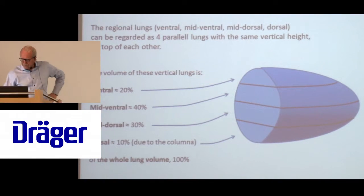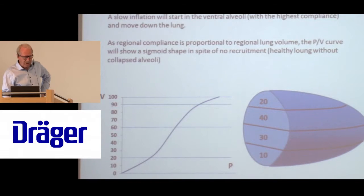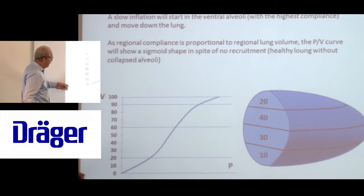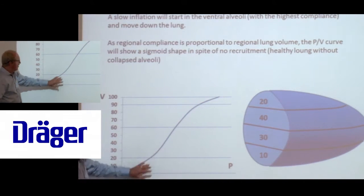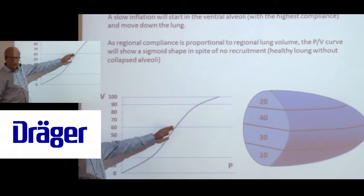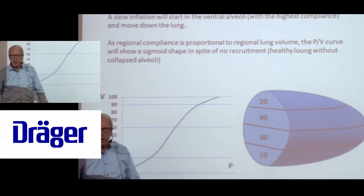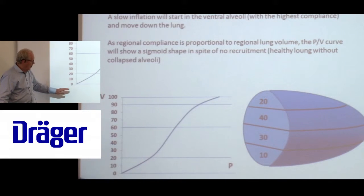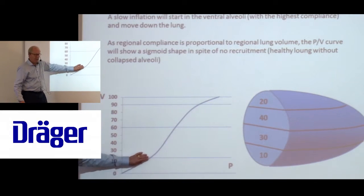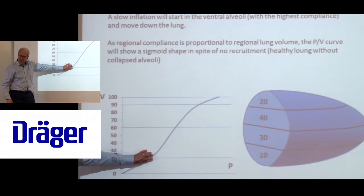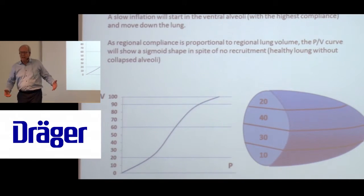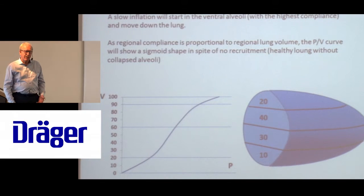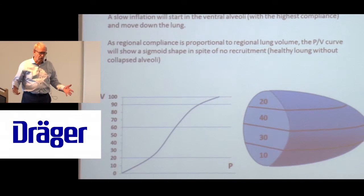When we look at the ordinary PV curve and do a slow inflation, it looks like this: we have a lower inflection point, then we get on a steep curve, and then an upper inflection point. People think that the first part is significant in that when we reach the lower inflection point, the lung is now recruited and getting better. But this is impossible - this is absolutely wrong.